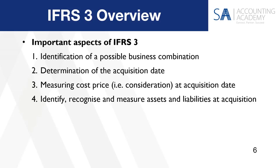One still has to be cognizant of applying the substance of that agreement over the legal form, so that you can account for the economic substance of the consideration. But at least you've got some form of an agreement that guides you through that process. So I would say that step three is a bit easier than step number four. Your success in point number four will determine how well you have calculated goodwill or gain from a bargain purchase, and how closely that represents the true goodwill or gain from a bargain purchase, because every possible asset or liability that you overlook in point number four will obviously have an impact on that calculation. So step number four — very, very important.